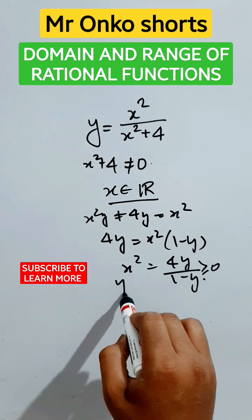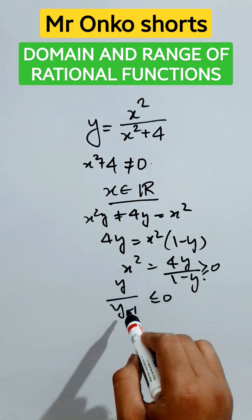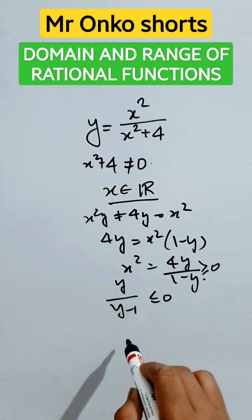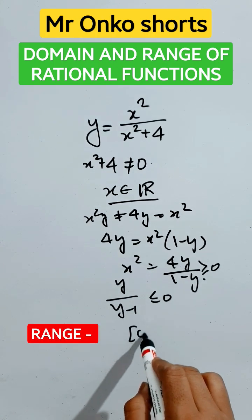So this part will be y divided by y minus 1, will be less than or equal to 0. So here 0 and 1 are critical points, so it will be closed 0 to open 1.